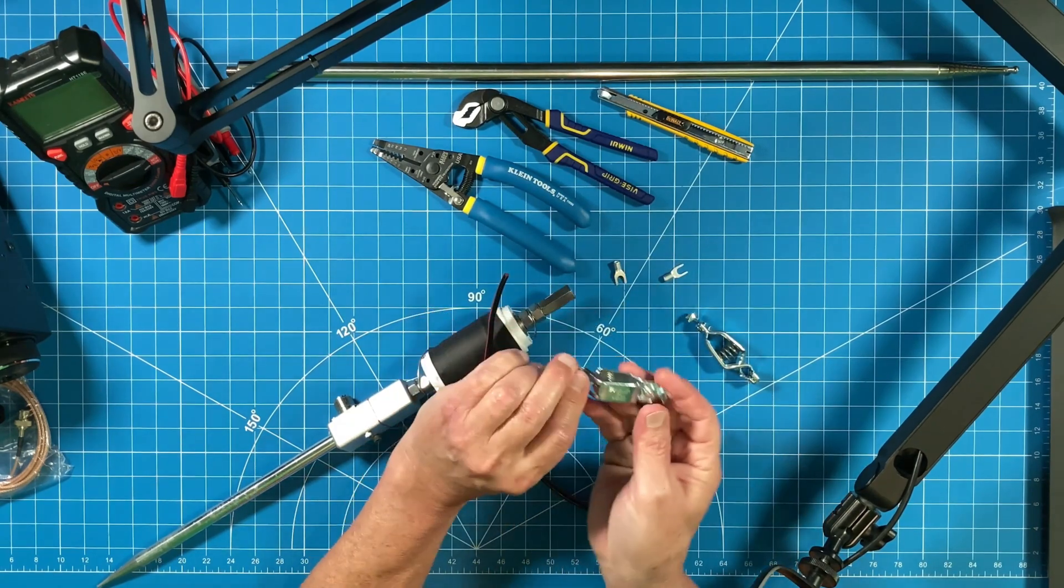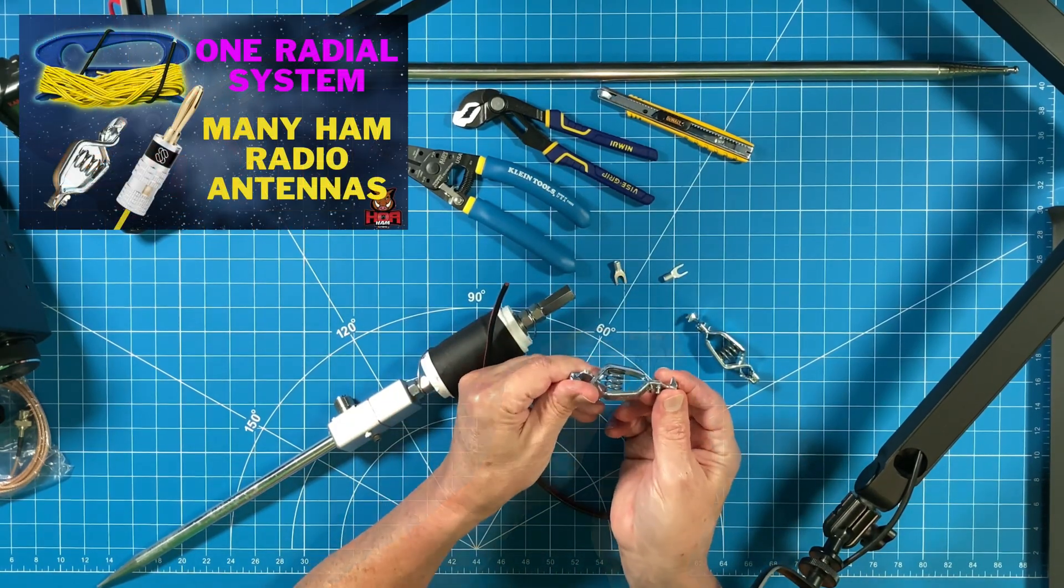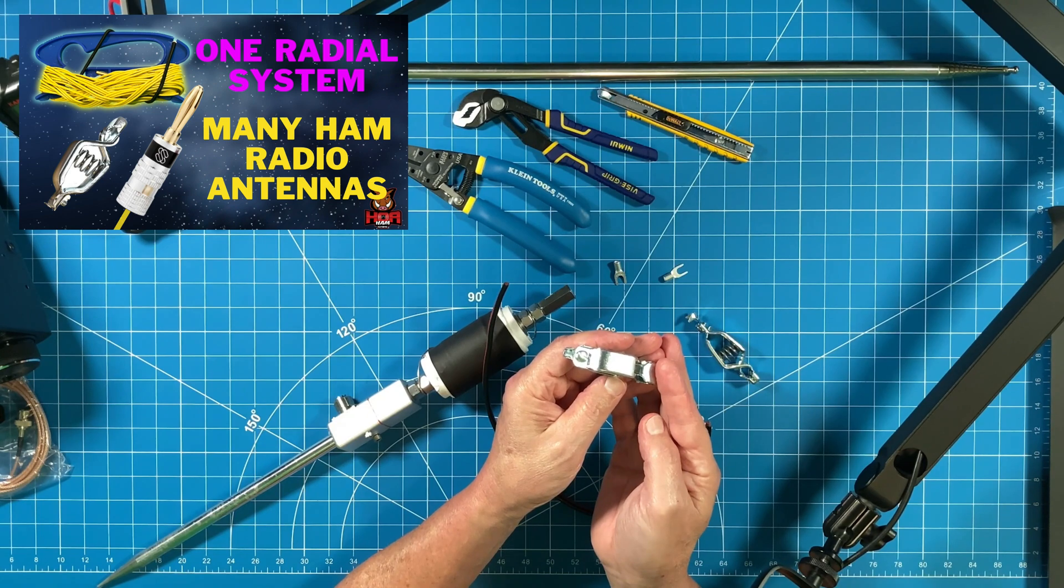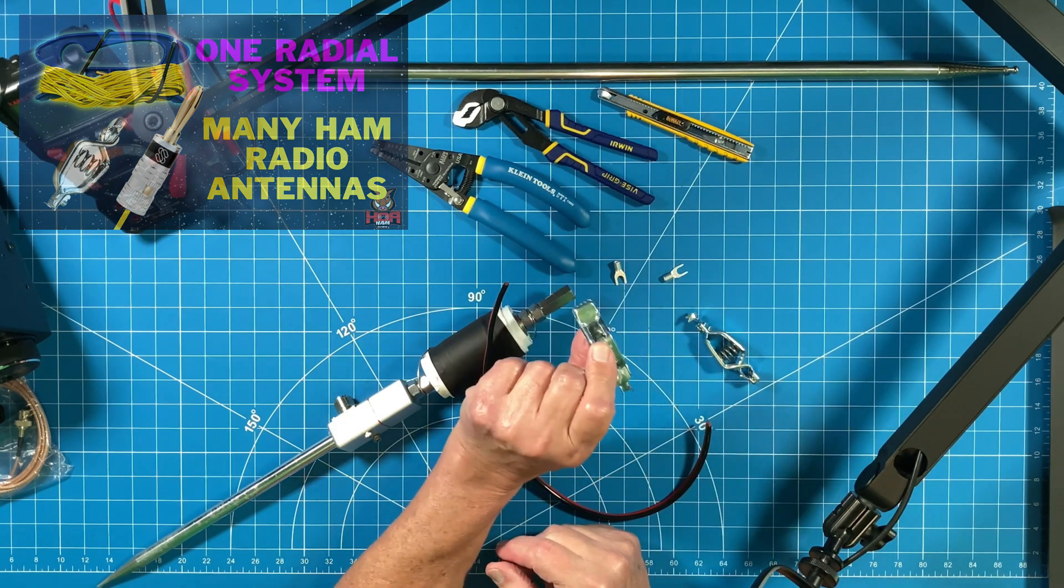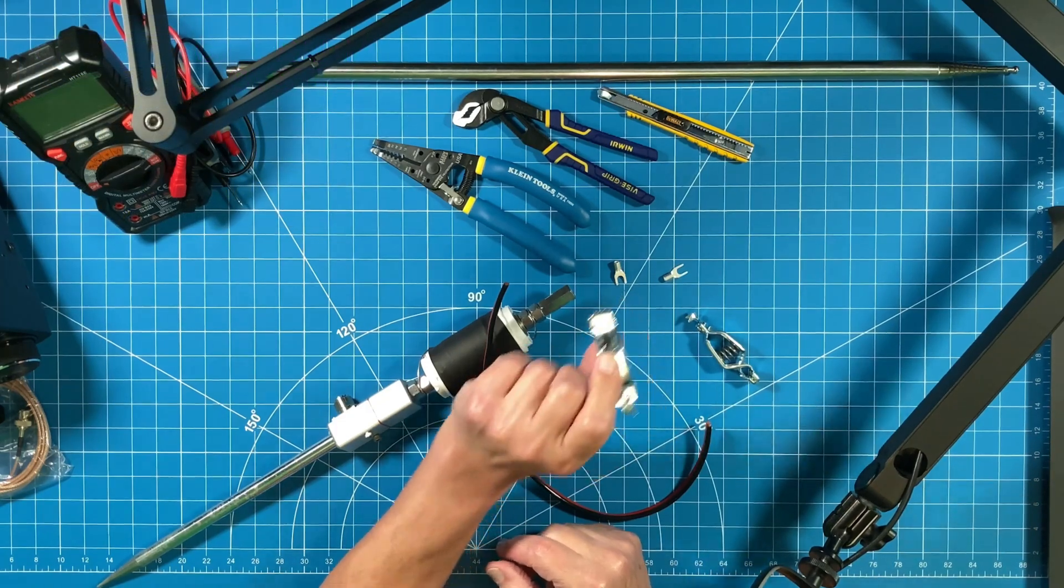And then I'm going to use these Mueller alligator clips, which I've used on my radial video, where I show you how to create a universal radio system for all your portable antenna systems. That's what we're going to use.